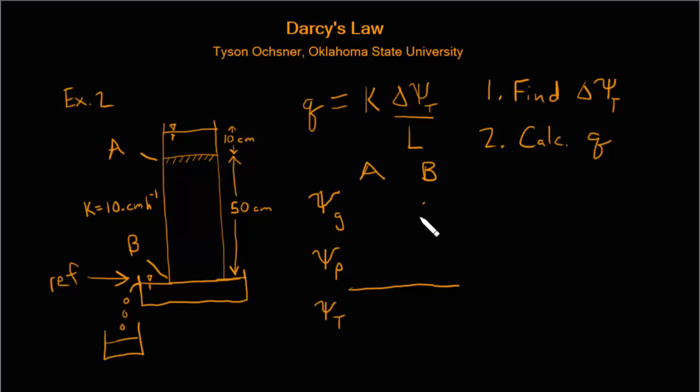So if that's our reference elevation, then for point B we have a gravitational potential of zero by definition. And point A here is 50 centimeters above our reference, so it has a gravitational potential of 50 centimeters.